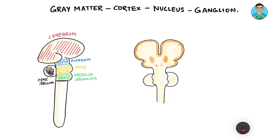Hello everyone, the Nerd Medic here. I believe you remember this diagram on the left-hand side from video one of neuroanatomy and neurophysiology. Now in this video, part two, we will learn about the basic concepts of gray matter, cortex, nucleus, and ganglion.